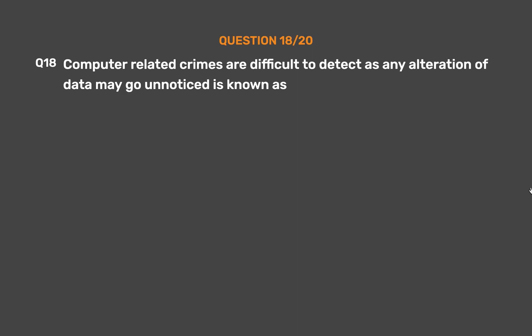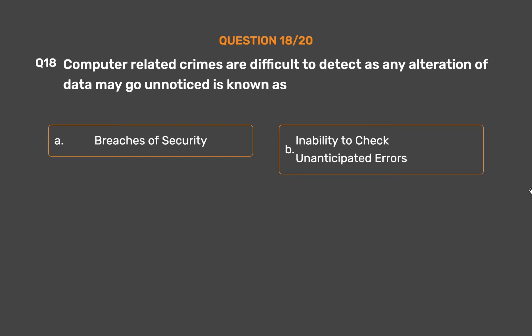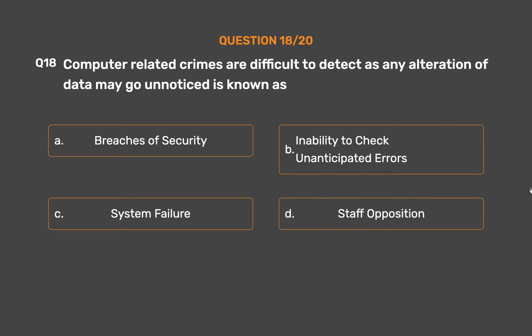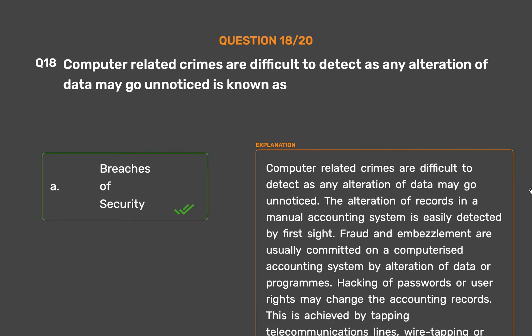Question number 18. Computer-related crimes are difficult to detect as any alteration of data may go unnoticed. This is known as: Option A: Breaches of security. Option B: Inability to check unanticipated errors. Option C: System failure. Option D: Staff opposition. The correct answer is Option A: Breaches of security. The alteration of records in a manual accounting system is easily detected at first sight. Fraud and embezzlement are usually committed on a computerized accounting system by alteration of data or programs. Hacking of passwords or user rights may change accounting records, achieved by tapping telecommunications lines, wiretapping, or decoding of programs.